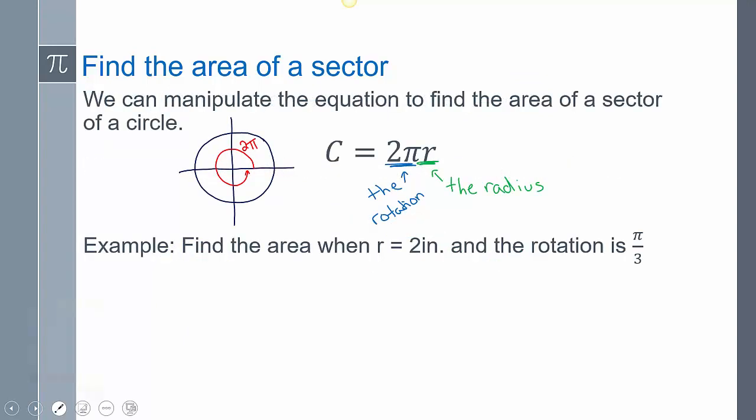So if I wanted to find the area of this sector right here, we have to do pi r squared. So pi times 2 inches squared. But my rotation is only pi thirds. I'm only traveling pi thirds. So that means I'm only going pi thirds out of my 2 pi. I'm not going all the way 2 pi. Going all the way would be I'm going 2 pi out of the 2 pi distance. But I'm only going pi thirds out of the 2 pi distance.